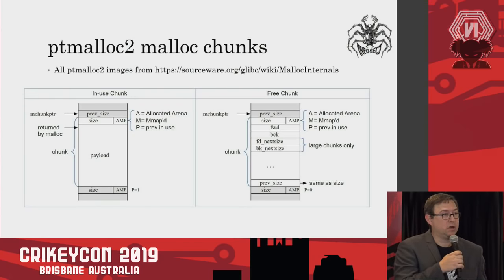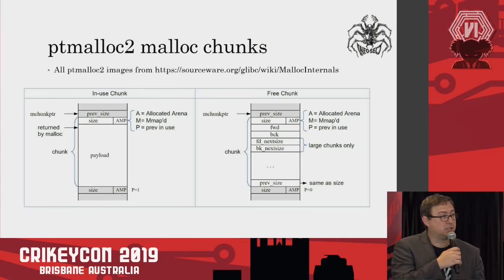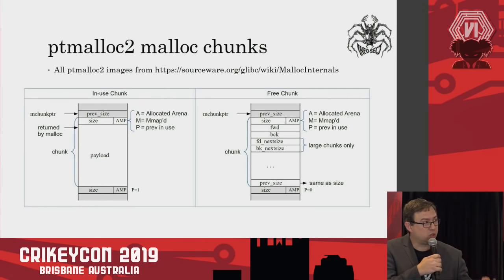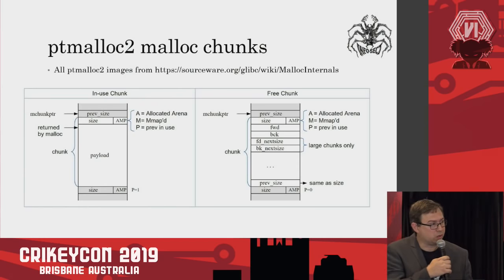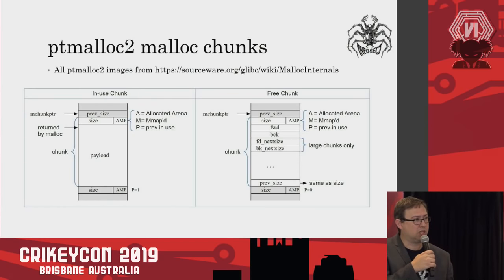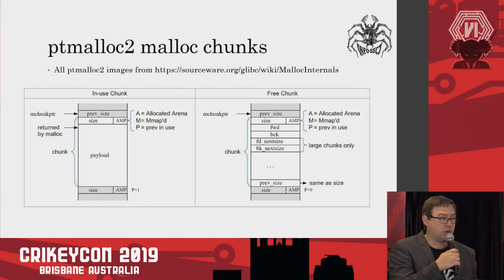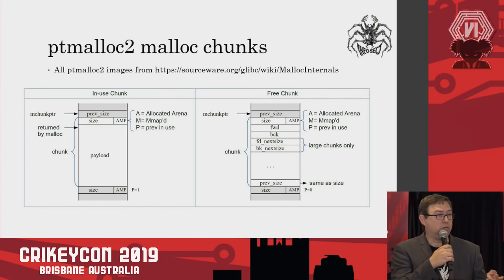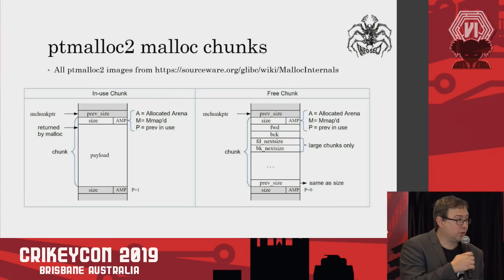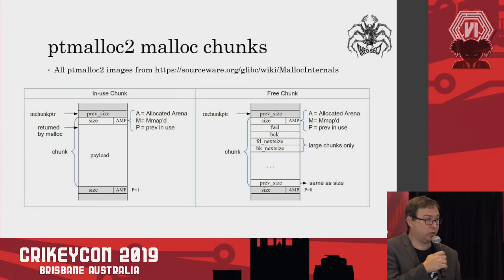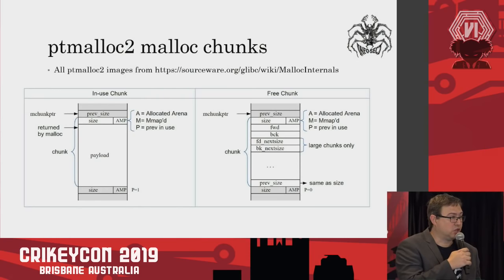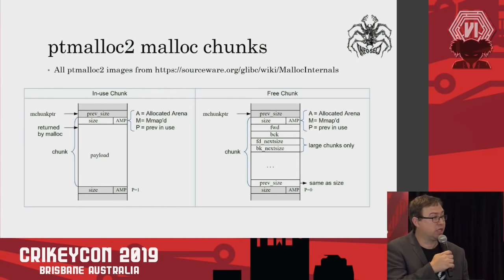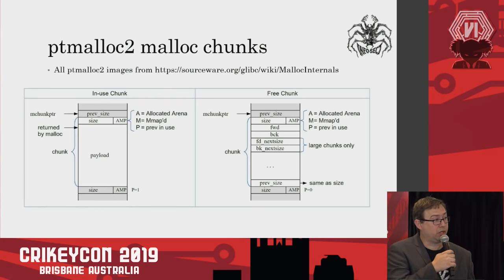Free chunks generally contain pointers that maintain them in a concept of a free list — almost like a linked list of free chunks. If we have a free chunk of memory that's part of a linked list, maybe we can modify some of those pointers and make the allocator do something it's not meant to do. So if we have a use-after-free, we might have access to those pointers. We can corrupt them, and in an ideal case we'll get an integrity check from the allocator, but if we can maintain those integrity checks, we might get the allocator to do something unintended.